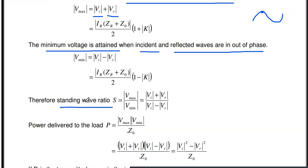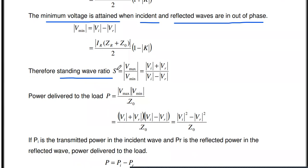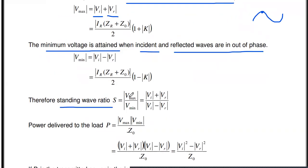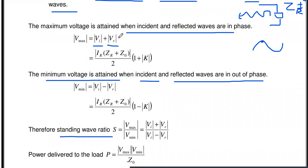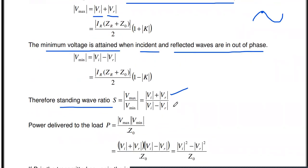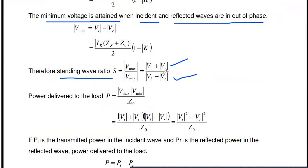From these, we derive the standing wave ratio. The standing wave ratio is the ratio of maximum voltage to minimum voltage in the standing wave system. V max is the addition of incident and reflected voltage; V min is the difference between incident and reflected voltage. So SWR = (V_I + V_R) / (V_I − V_R).